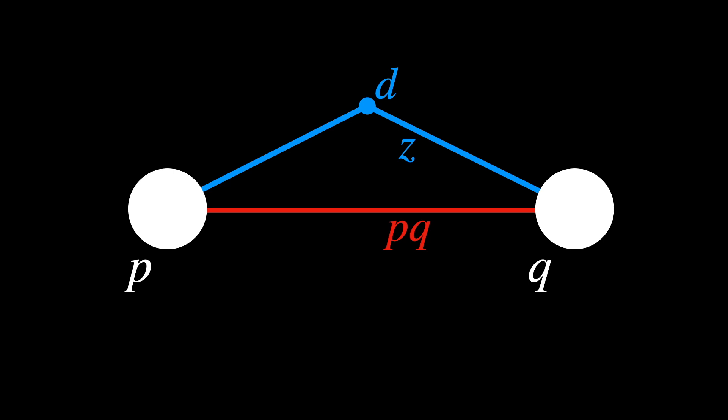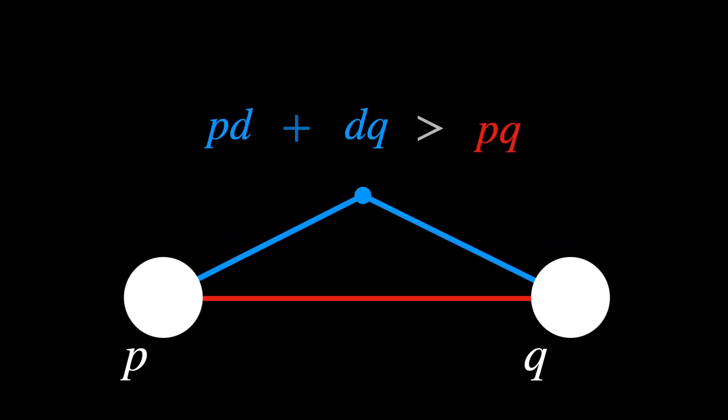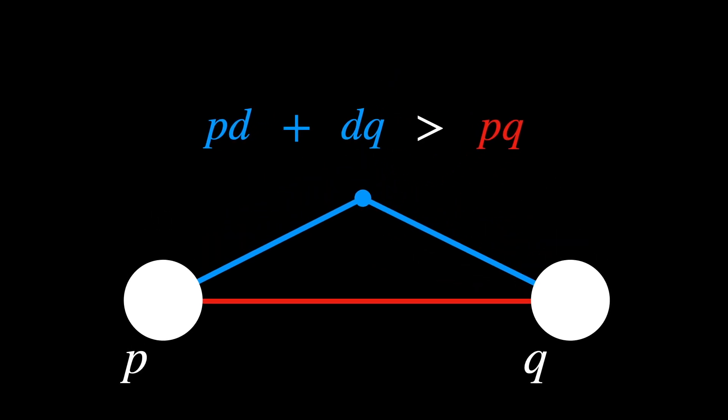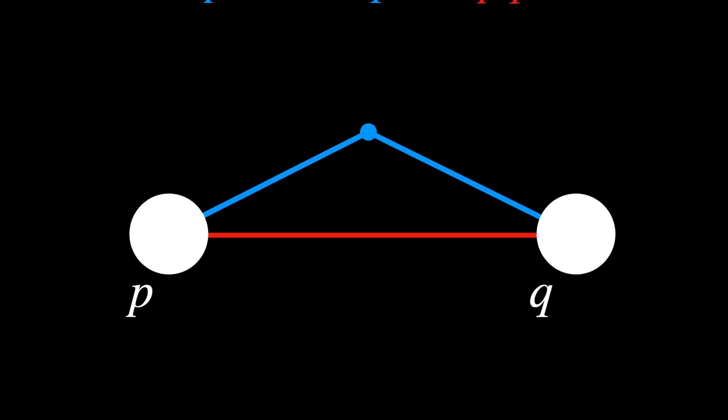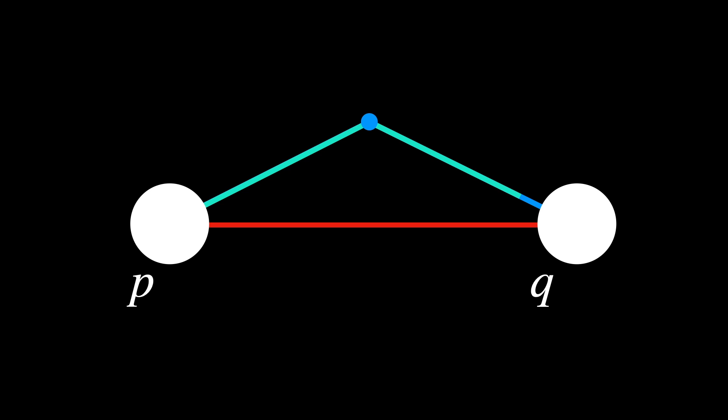Essentially, Z will look like a broken line from P to D to Q. According to the triangle inequality, the sum of the lengths of any two sides of a triangle must be greater than the length of the third side. Thus, PD plus DQ is greater than PQ. This inequality shows that taking a detour through D results in a longer path than going straight from P to Q.